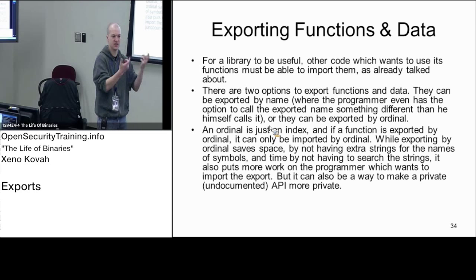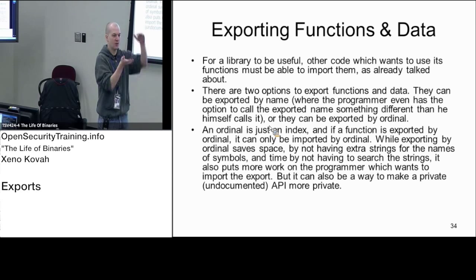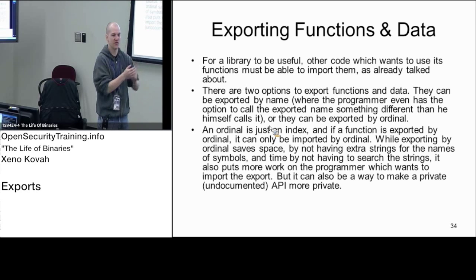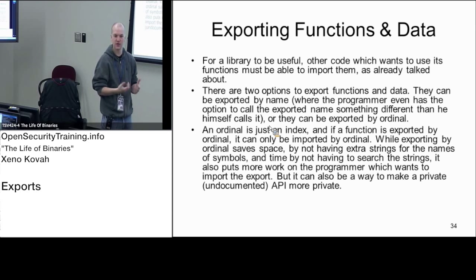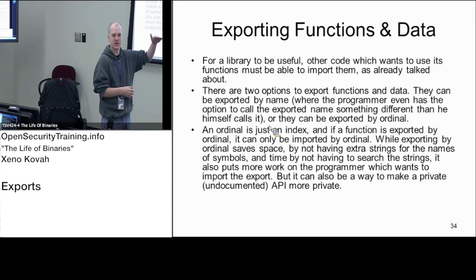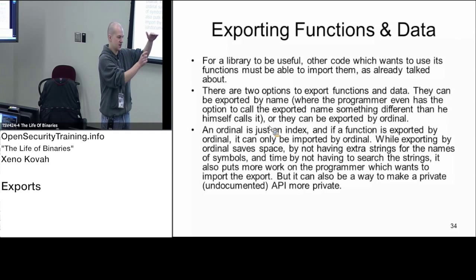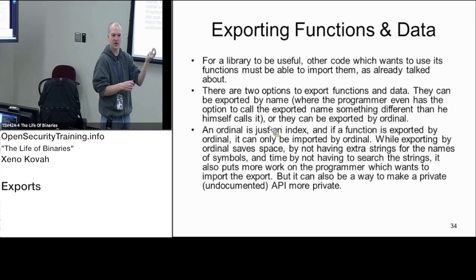So if this is your libc library, it says here's the string 'printf' and here's the RVA within my own module — relative to my own module — where you can find printf. If you want to find the absolute virtual address of printf, first you find the base address of the libc module in memory, then you look up in this table. Printf has this RVA, so you take the base address plus that RVA to get the absolute address of printf.